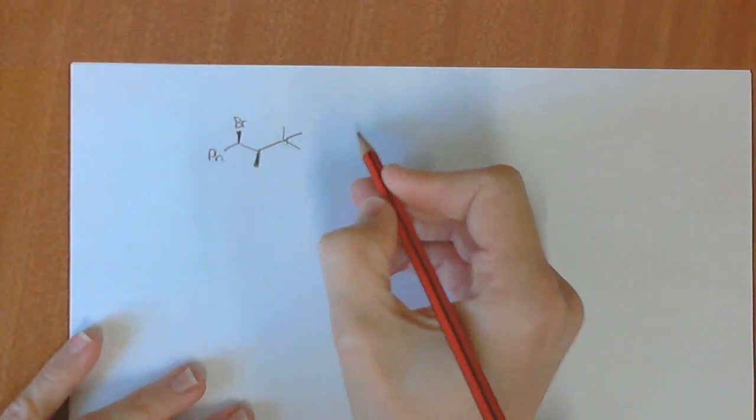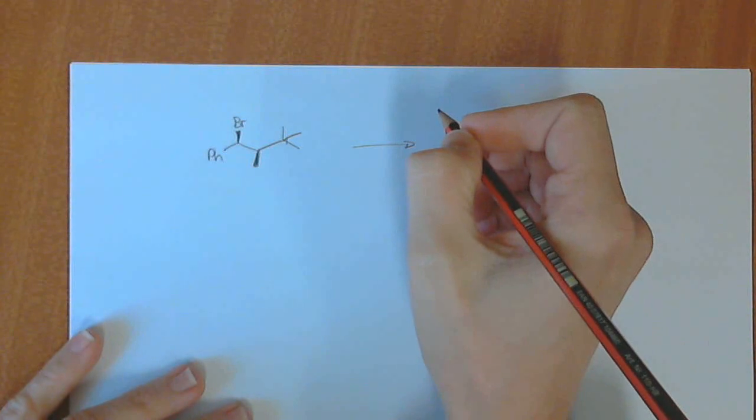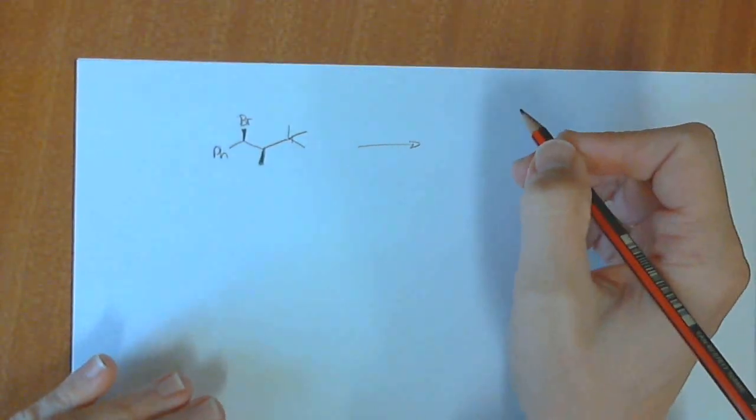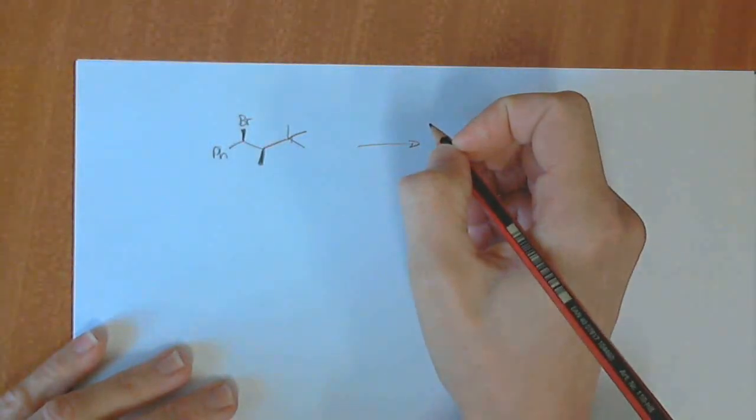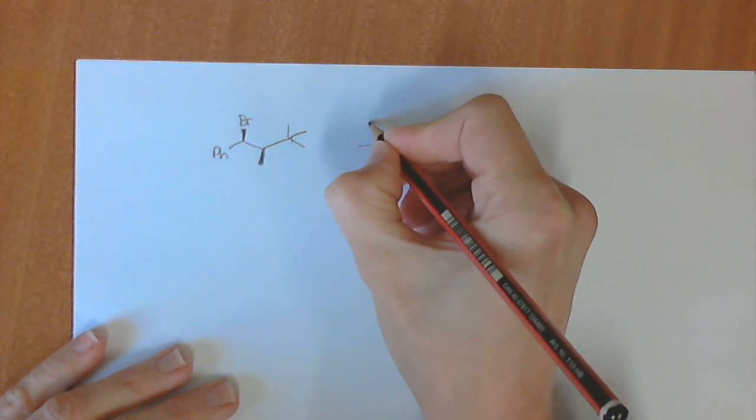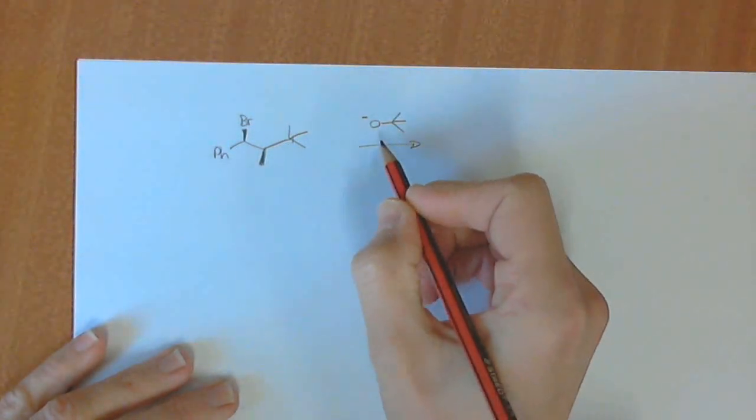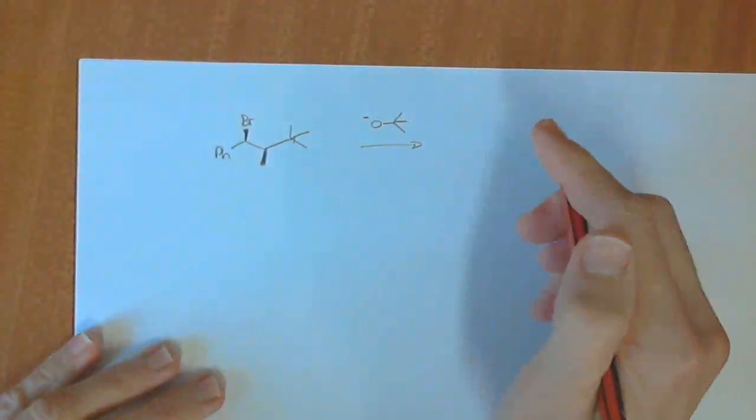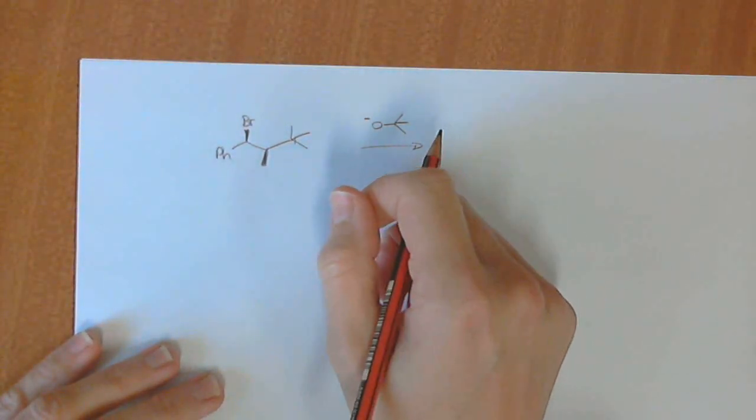So elimination reactions, in order to do that, we need to use a very strong base. And whenever we do something like that, we're going to start with bases that are O minuses. And for elimination to occur, if we want it to act as a base, O minus is good. But it's nicer and better to use a bulky base. We could also have used the stronger ones, LDA, which we've covered before, et cetera. But this is great for elimination. Ethoxide would have also possibly worked.